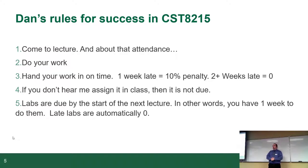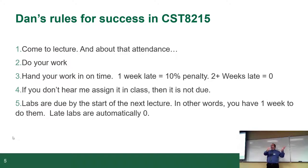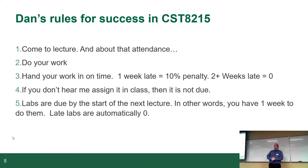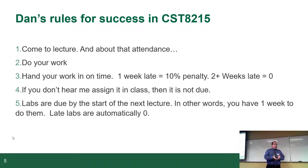Since I work full-time outside of teaching, I allow a one-week grace period. If the work is due Friday and you're a week late, I'll take 10% off the top. If you're two weeks late, you get zero. I don't have time to hunt you down. If you're more than two weeks late, it's an automatic zero — basically at 12:01 Friday night I'll go through and assign zeros for anyone who hasn't handed in the work.